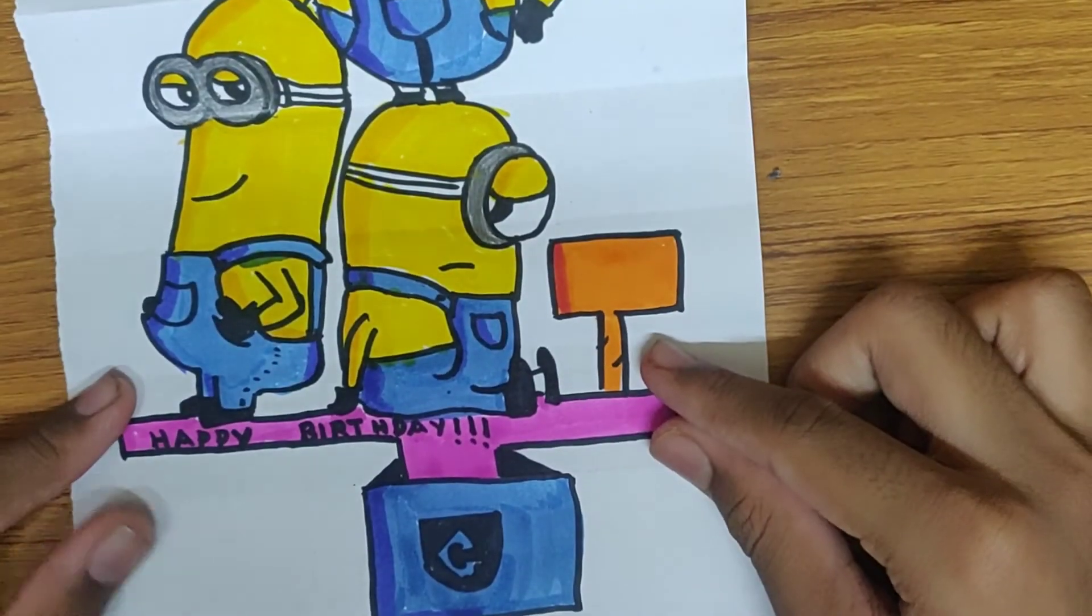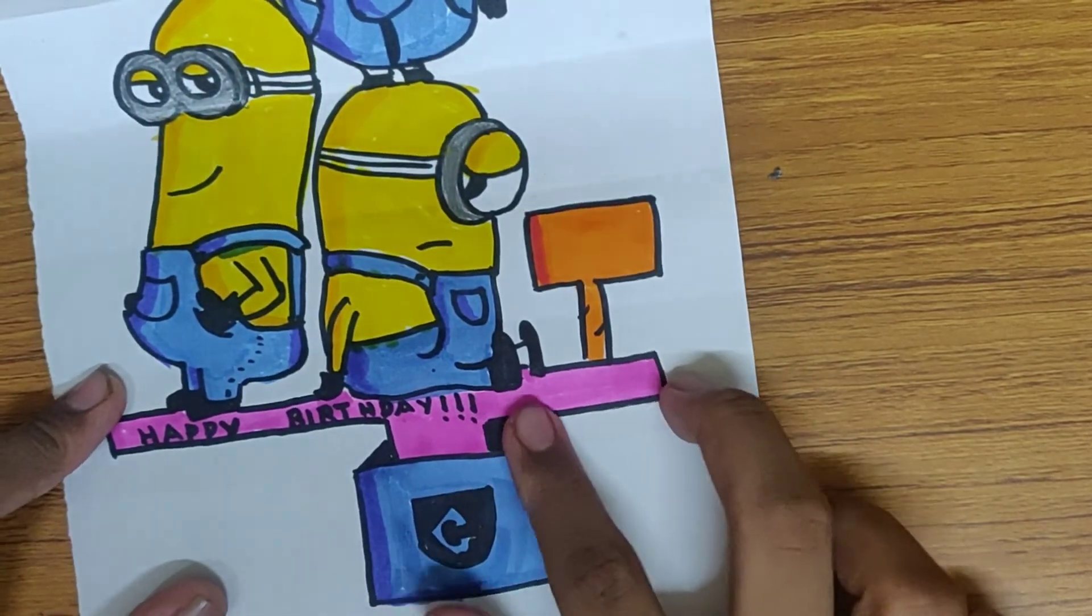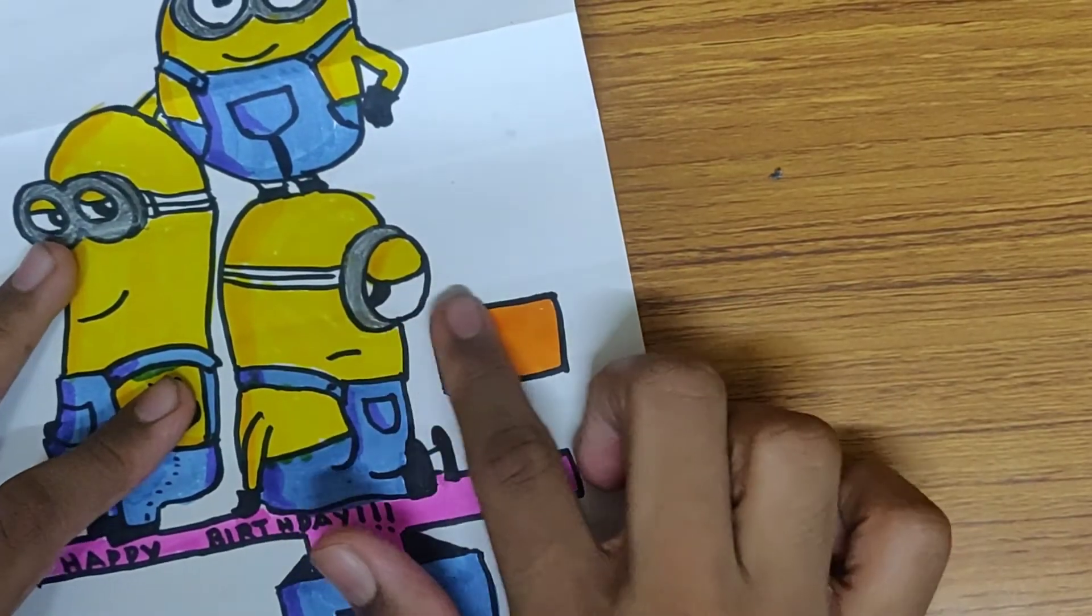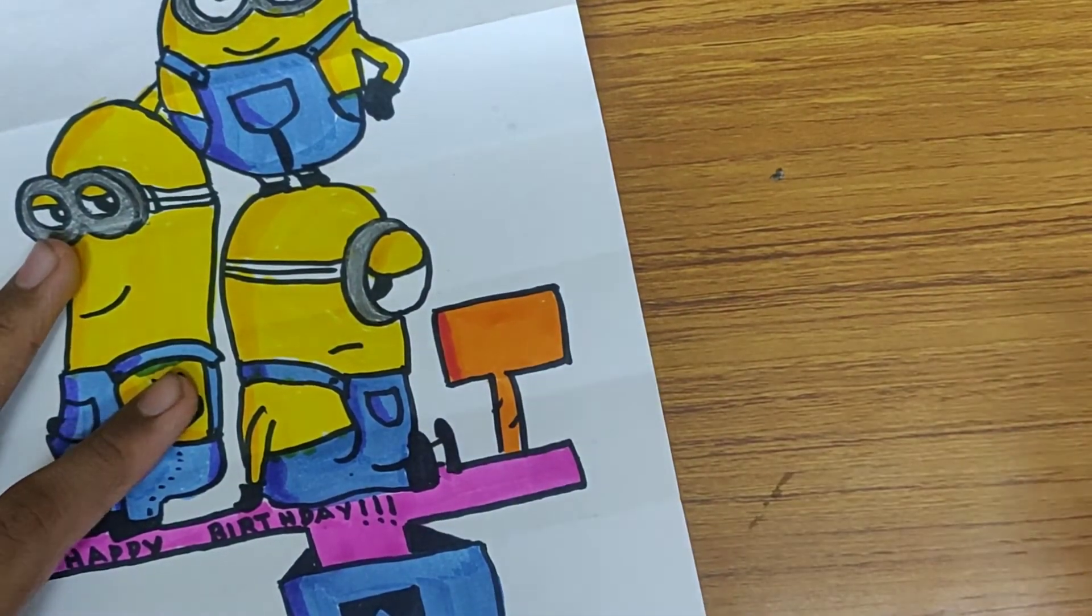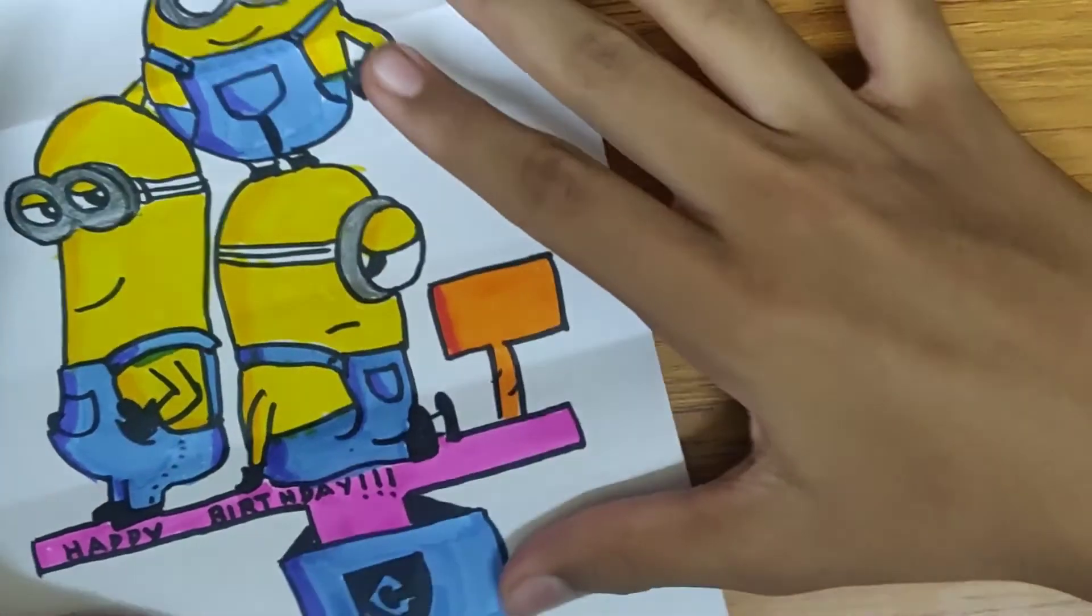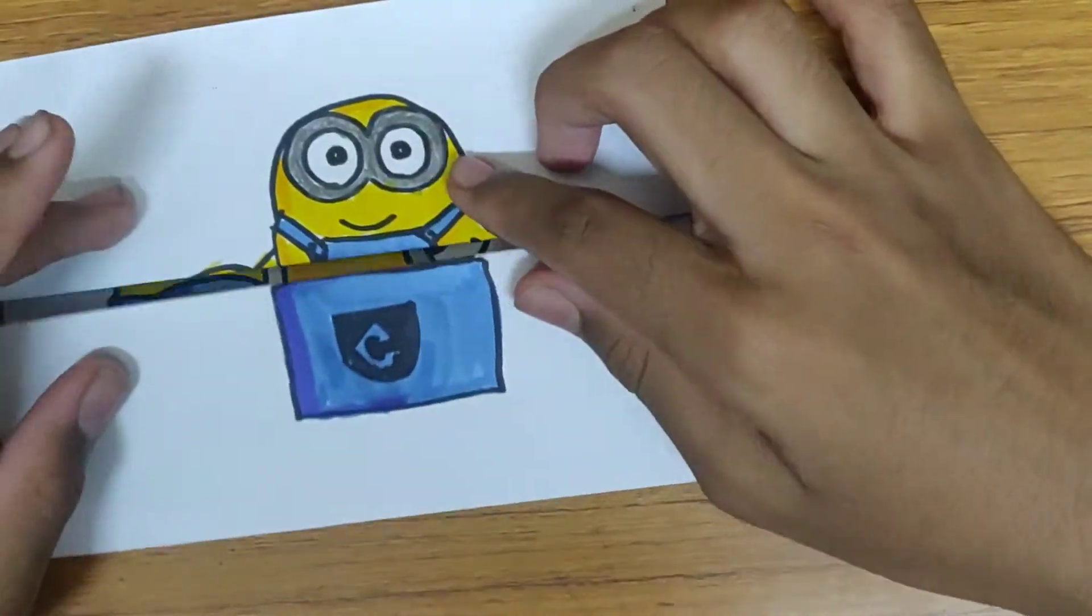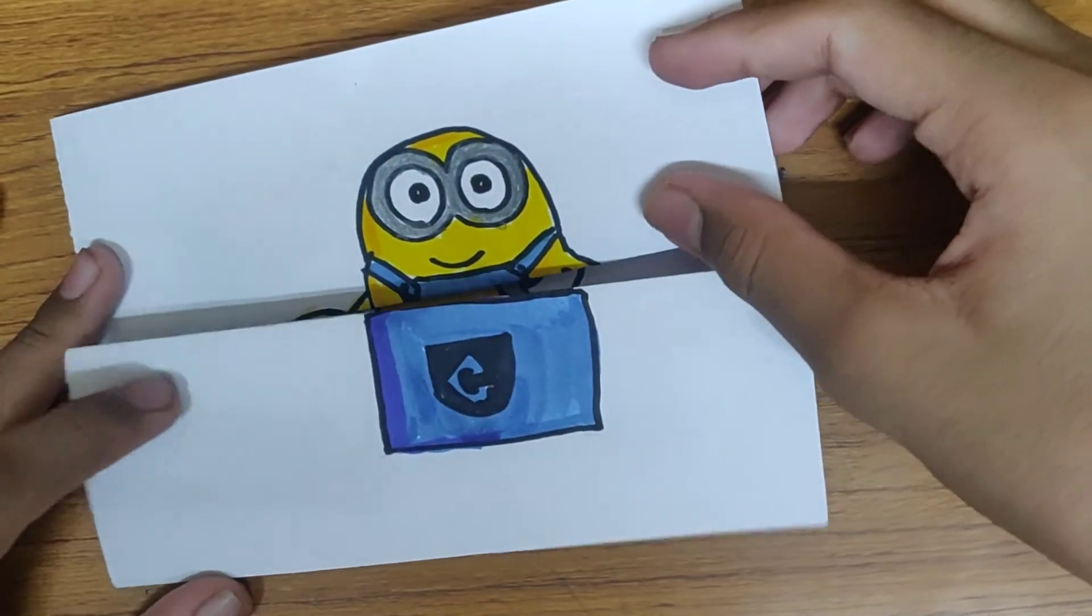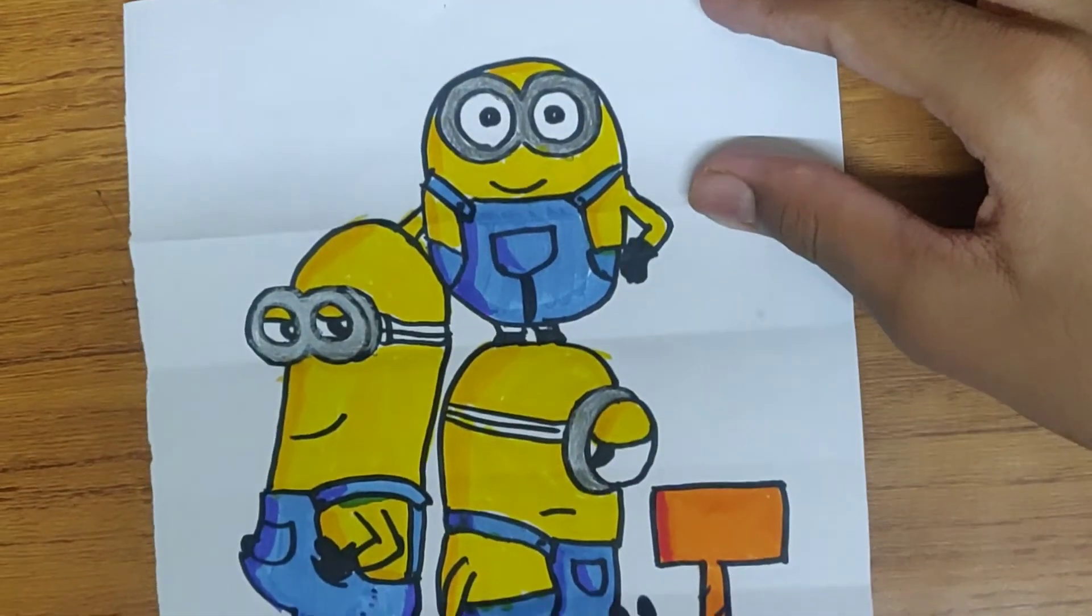It's all done friends. Isn't it so much fun? There's Bob over here, a minion fold. It's Kevin and Stewart. And there's a small rectangular plank that I created. You could write the name in this space over here. And you could also write the age. Say turns 12, turns 14 etc. So that's our easy folding surprise card friends.